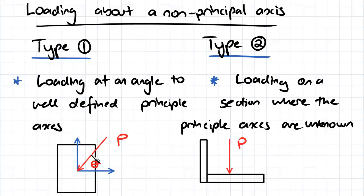So you would need to solve for the second moment of area about the local axes and then try and convert that into the principal axes.